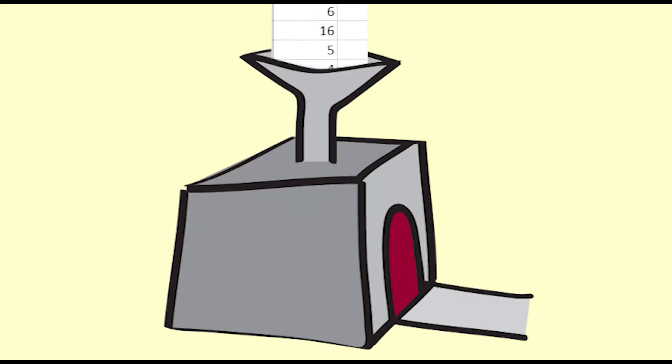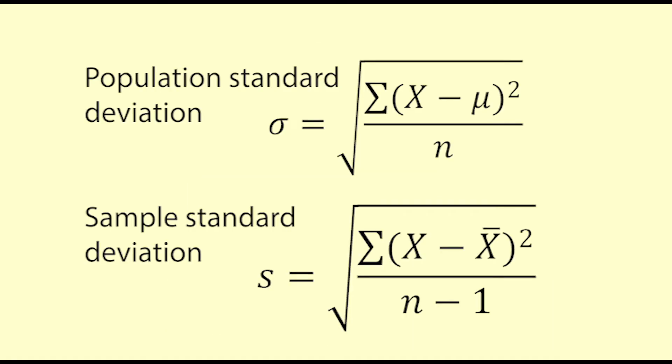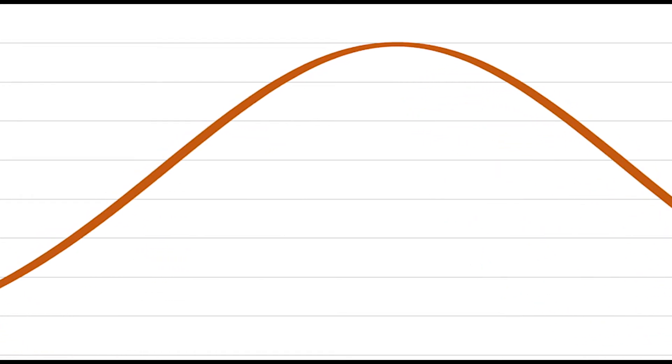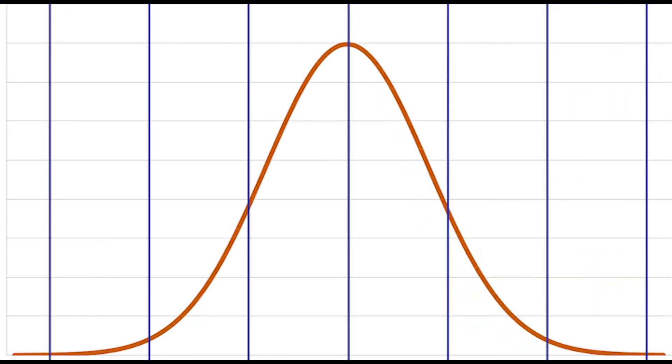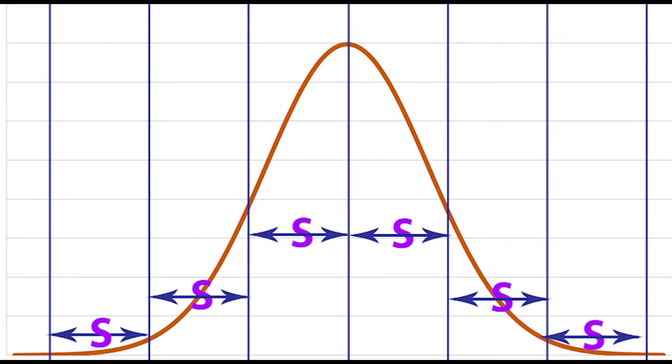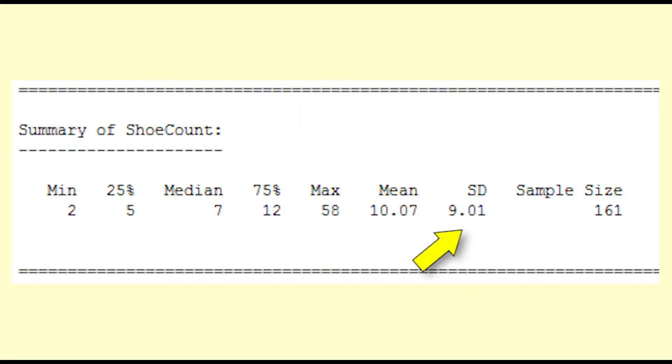In reality we get a computer to find the standard deviation. There is a slight difference in the formula for finding the standard deviation of a population or a sample. Unless your sample is very small it makes no practical difference. The standard deviation gives an indication of how spread out your distribution is. For just about any distribution nearly every value will fall between three standard deviations above or below the mean. The standard deviation for the shoe data is 9.01.